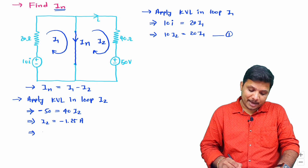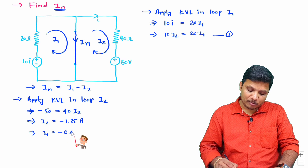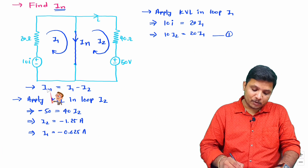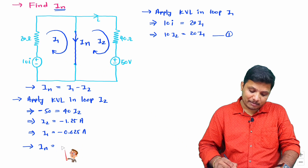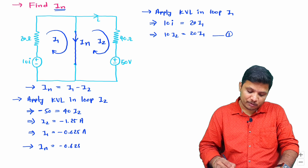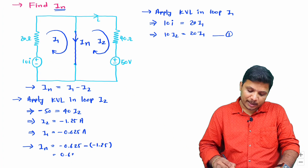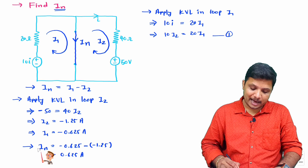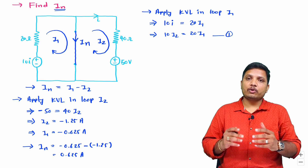So I_1 equals half of I_2, which is minus 0.625 amperes. Now with both I_1 and I_2 known, I_n equals I_1 minus I_2: that is minus 0.625 minus (minus 1.25), giving plus 0.625 amperes. This is the equivalent current source value for Norton's theorem.